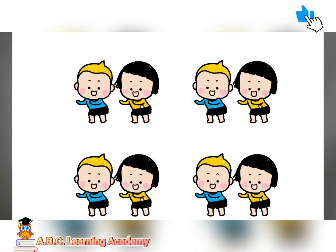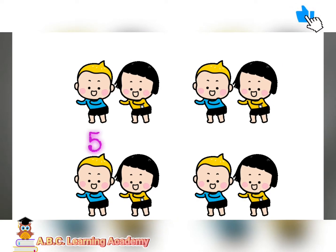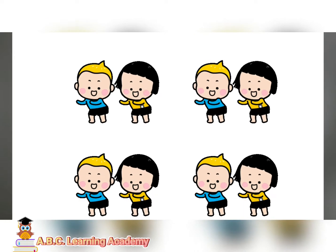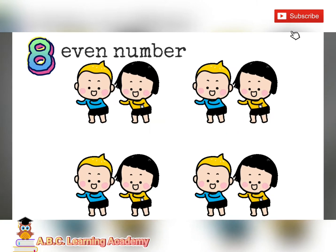How many children are dancing in this clip? One, two, three, four, five, six, seven, eight. There are eight children dancing, and they are all in a group of two. They are dancing in pairs. Can you see a child dancing alone? No, there is no one dancing alone. Therefore, number eight is an even number.